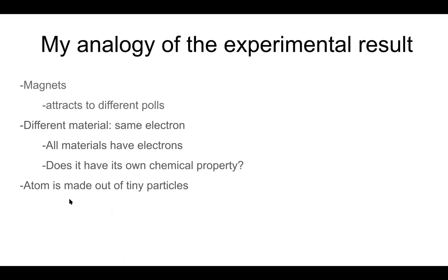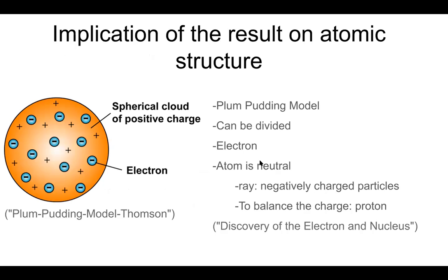My conclusion is that the atom is made out of tiny little particles, and there are electrons. This is the atomic structure of J.J. Thomson's model, which is called the plum pudding model. He disproved John Dalton's idea that the atom cannot be divided — instead, he proved that there is an electron inside of it, so it can be divided. The atom basically had electrons inside of it.